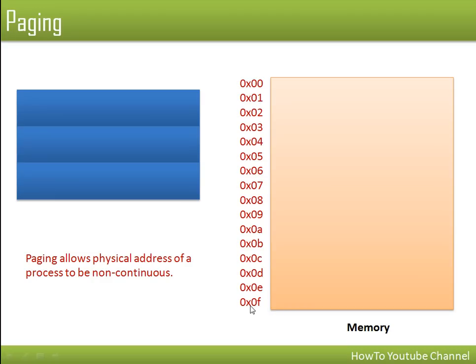Hello everyone. In this video we will learn paging in operating systems. Before paging, when you want to run any program, that entire program is loaded into memory in a continuous fashion. So if that program has a size of one MB, it will be loaded in a memory region where there is an empty space of one MB.